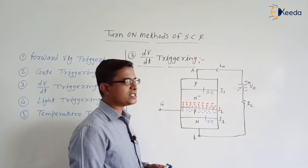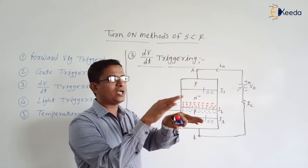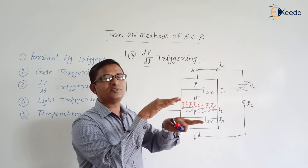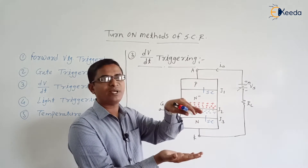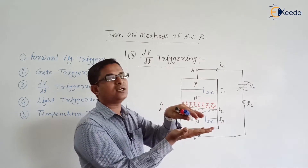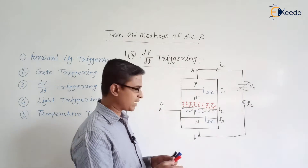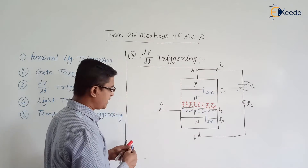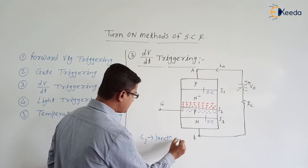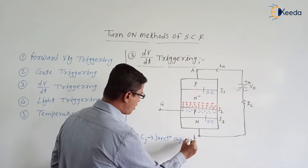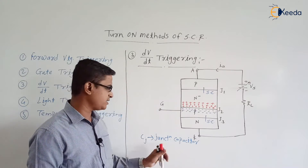Junction J2 is acting as a capacitor. Recall the parallel plate capacitor — in a parallel plate capacitor we have different charges at each plate: positive at one plate and negative at the other. Similarly, junction J2 has positive charge carriers on the N- side and negative charge carriers on the P side. That is why junction J2 is acting as a capacitor. Let us consider Cj as the junction capacitor of junction J2.